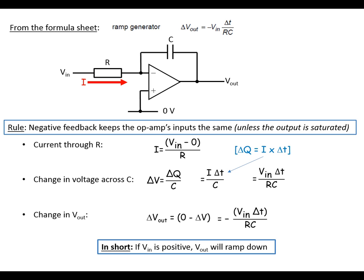So in summary for this: if V in is positive, then V out is going to be ramping downwards.